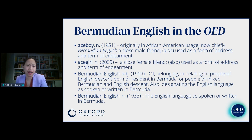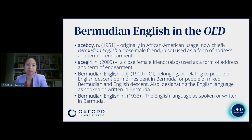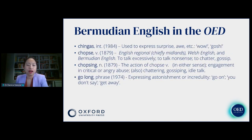Bermudian English as an adjective was first used in earliest attestations to describe people of English descent born or resident in Bermuda, or those of mixed Bermudian and English descent. Later it came to designate the English language spoken or written in Bermuda, and by 1933 the noun phrase also referred to the variety of English spoken there. We also have the interjection chingos, dating back to the early 1980s, used to express surprise — similar to wow and gosh.